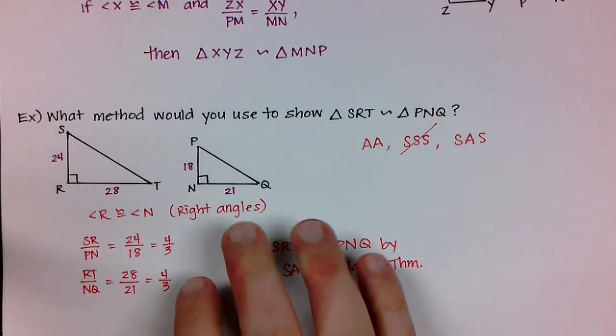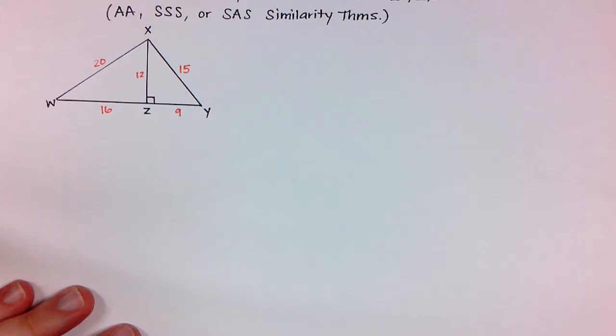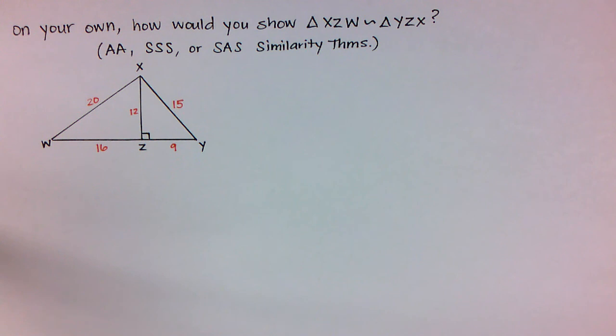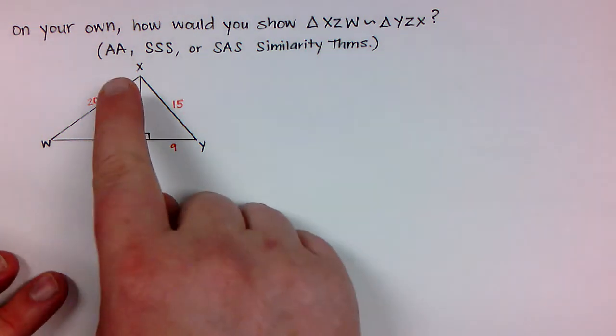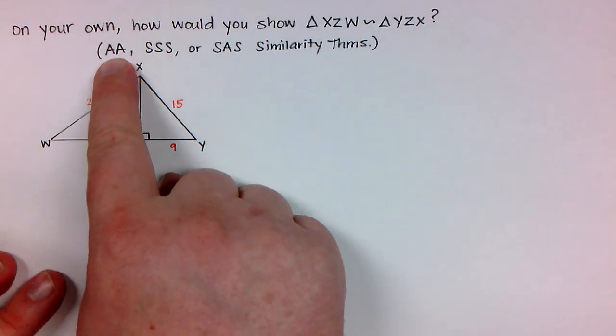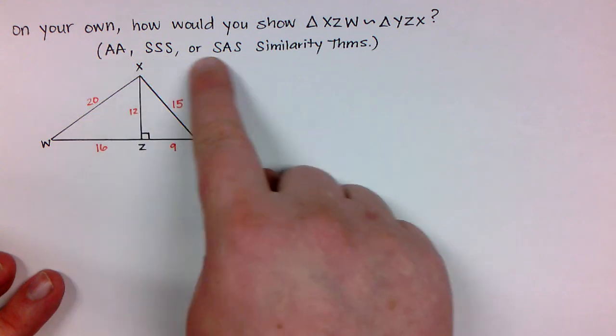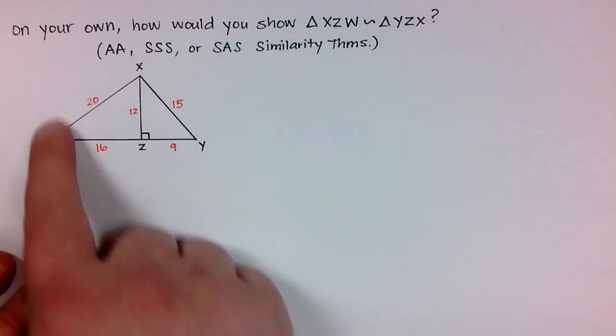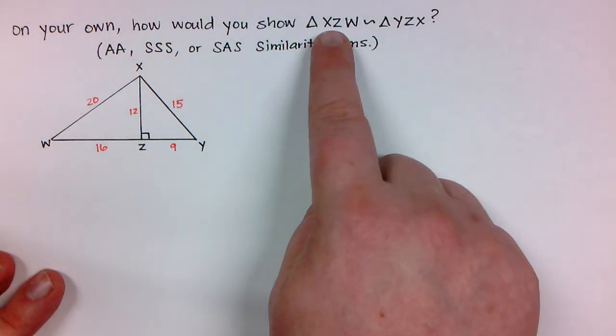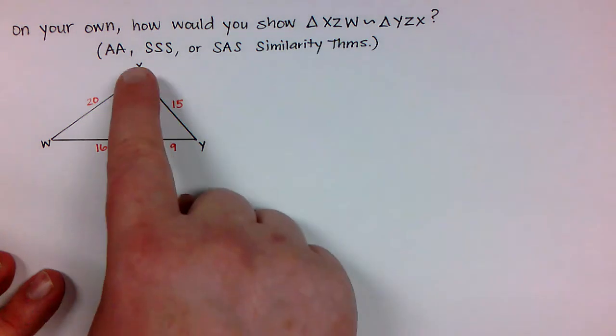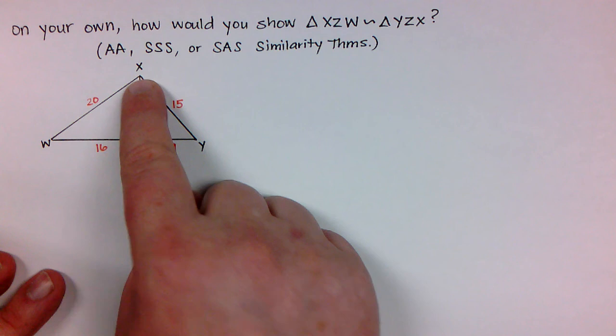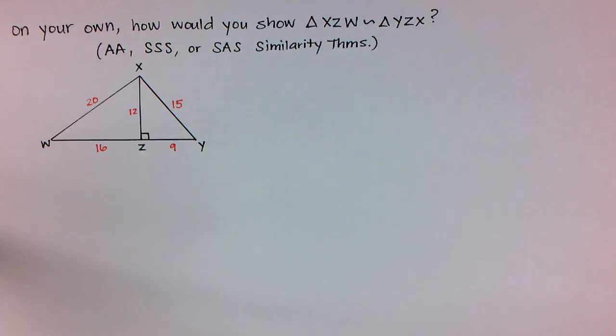So I have one last example for you to try on your own before you come to class and I want you to think by the information that you're given if you would use AA the similarity postulate or the SSS or SAS similarity theorems to prove that these two triangles are similar. So this is triangle XZW and also YZX. Okay, so come to class with this done and I'll help you out with any other questions you might have.